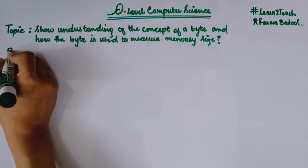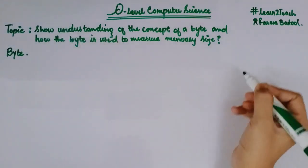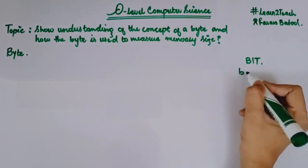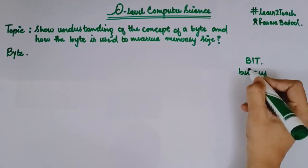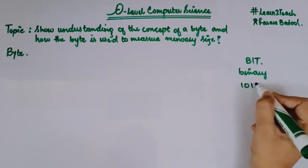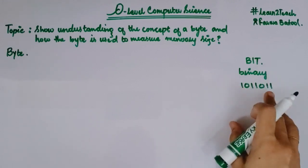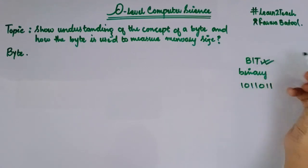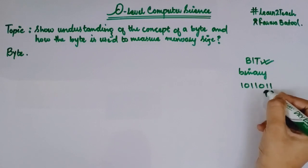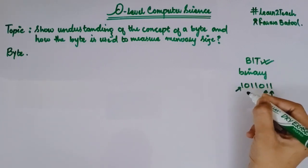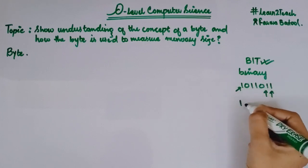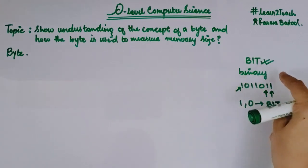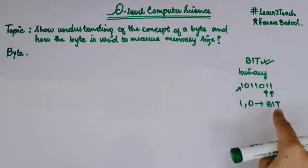Let's share the definition of a byte. But before byte, let me tell you what a bit is — B-I-T, bit. We already have an understanding of binary numbers. Let's suppose I have a binary number 1-0-1-1-0-1-1. If I talk about a bit, then a bit is nothing but this individual digit — either it is 0 or 1. This single digit in a binary number, either 0 or 1, is known as a bit.